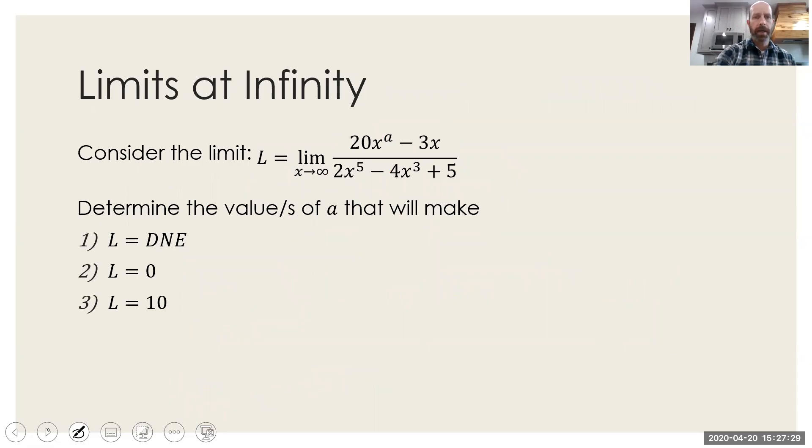Example number two, they're asking us to consider the following limit, and they want us to figure out which values of a will make the limit equal to DNE, the limit equal to zero, and the limit equal to 10. What the key concept here is, we'll note that this limit is going to infinity. If a is five, then that limit will be equal to the ratio of those coefficients over 10. So there's your answer for part three.